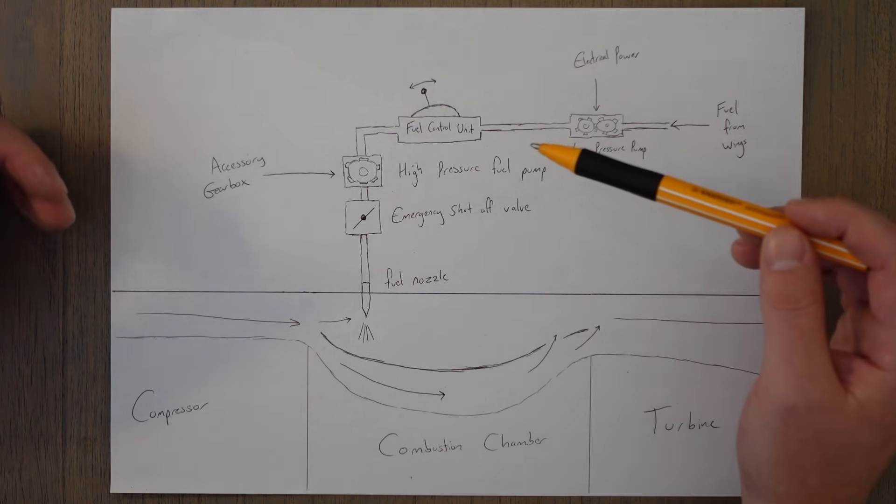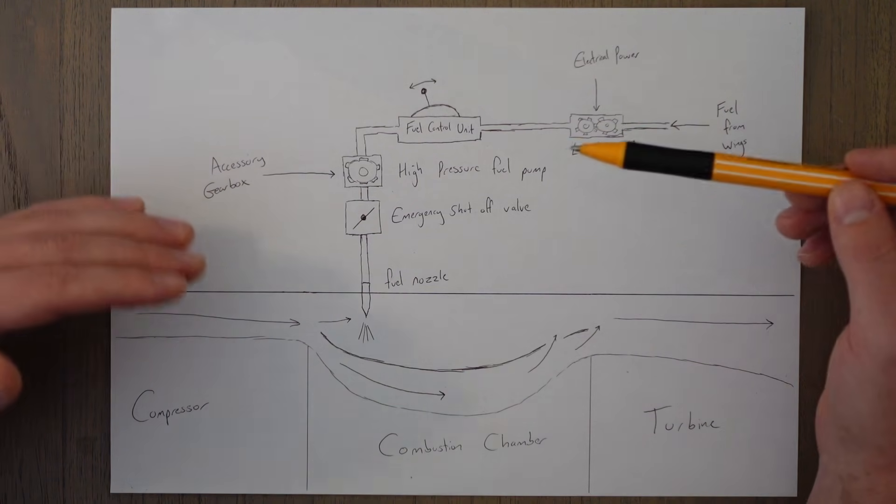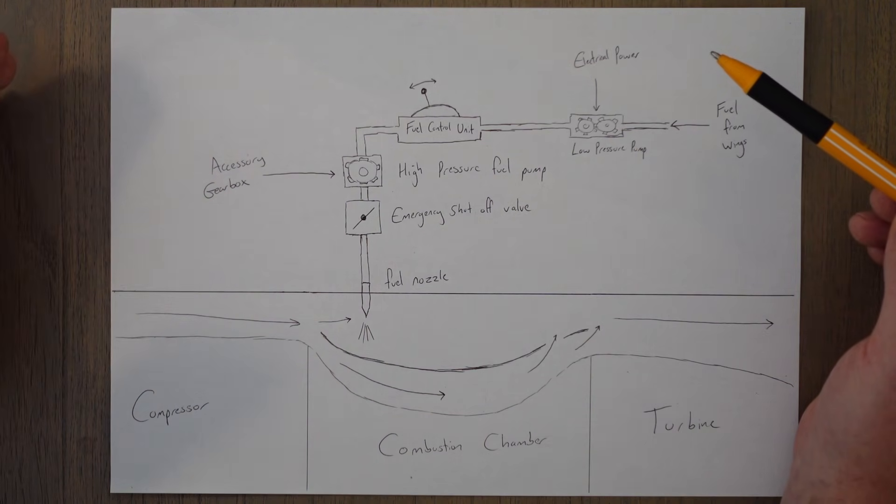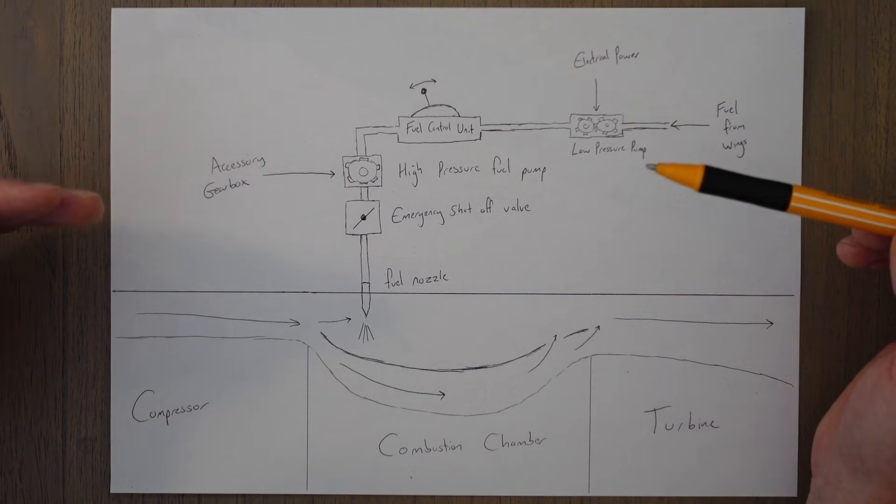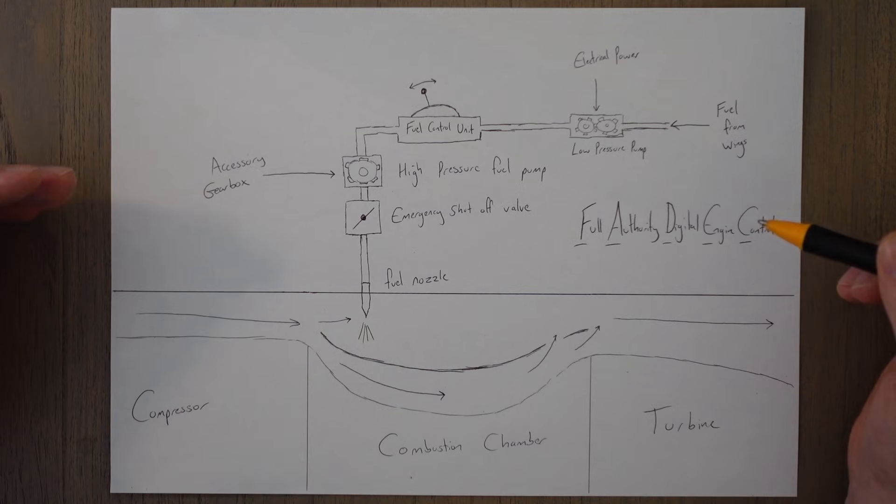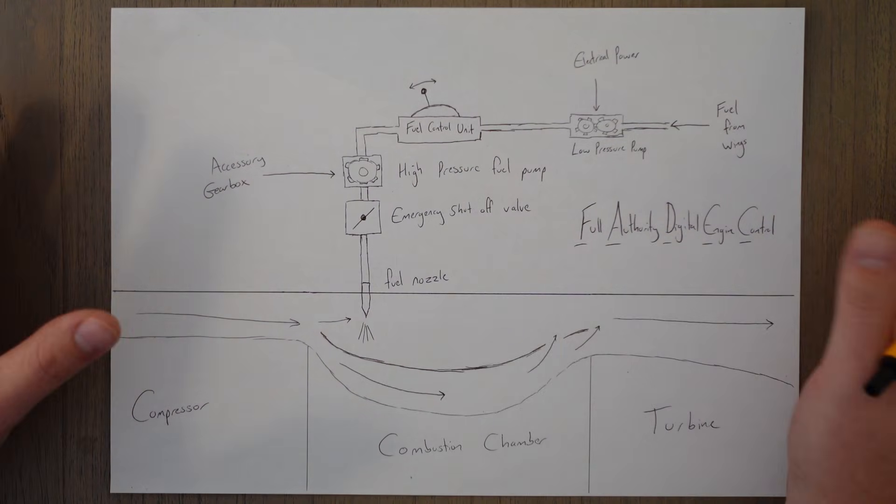The FCU is a complicated hydro mechanical system which has been upgraded in almost all modern aircraft to a FADEC system, which stands for Full Authority Digital Engine Control.